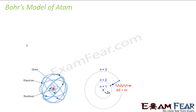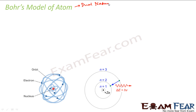Now let us understand the Bohr model of atom. By the time Bohr was designing the model, there were two things that were hot in the market. One was the dual nature of electron. The second was the spectrum, which nobody knew how it comes. Bohr took care of the spectrum but he did not take care of the dual nature of electron.